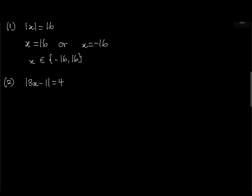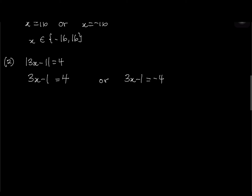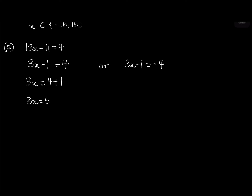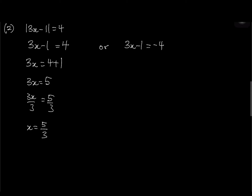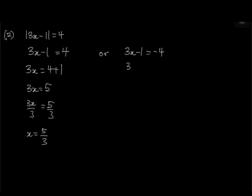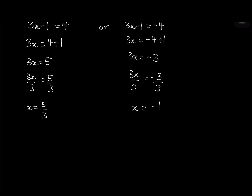The second question: absolute of 3x minus 1 equals 4. We have two statements: 3x minus 1 equals 4, or 3x minus 1 equals negative 4. For the left side: 3x equals 5, so x equals 5 over 3. For the right side: 3x equals negative 3, divide by 3, x equals negative 1.